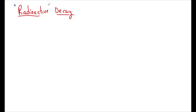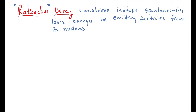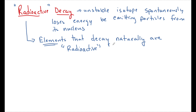I think when we see the word radioactive, we think that's a bad thing — somebody's going to get sick, we think Chernobyl. That's not always the case. Radioactive decay is simply when an unstable isotope spontaneously loses energy and emits particles from the nucleus. It's really just a splitting of the nucleus. Radioactive just means that the decay is going to happen naturally, like without any trigger or fuse. Not all elements are going to decay naturally. There's only a specific amount of elements that do so, and those are what we call radioactive.